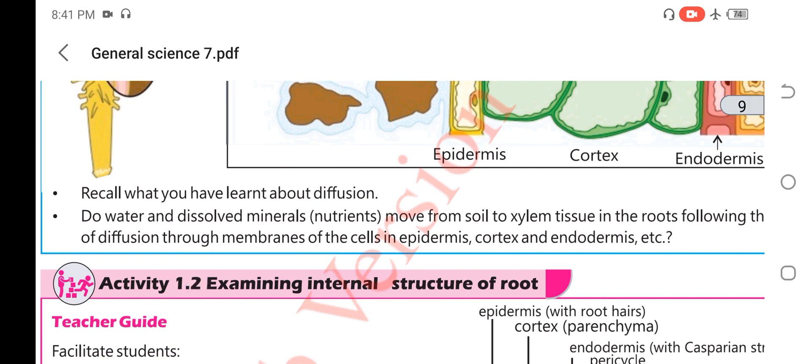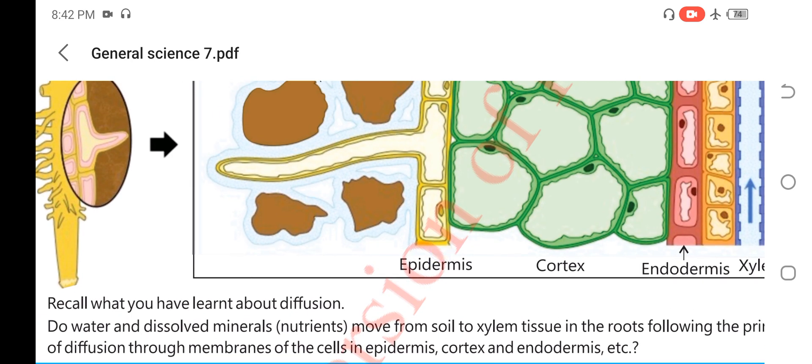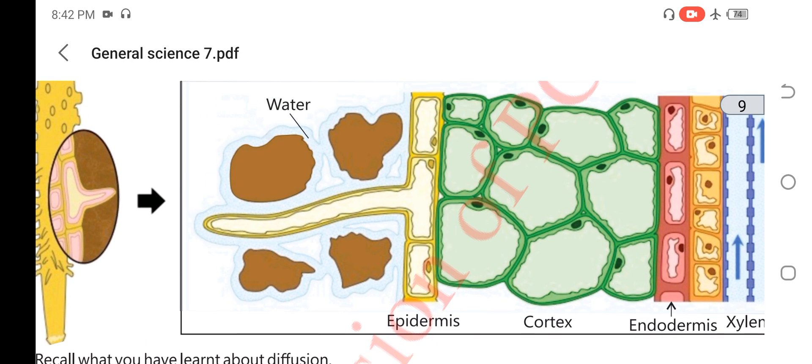Do water and dissolved materials, minerals, and nutrients move from soil to xylem tissue in the roots following the process of diffusion through membranes of the cells in epidermis and cortex? Yes. The process of movement is the process of diffusion.